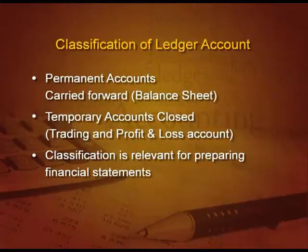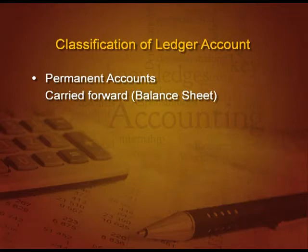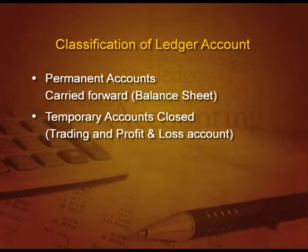Now let us classify the ledger accounts. There are two types: permanent accounts and temporary accounts. Permanent accounts are those which are carried forward in the balance sheet for the next period, whereas temporary accounts are those which are closed either in trading account or in profit and loss account. For example, furniture and building are permanent accounts — they are carried forward to the next year. Wages, salary, and office expenses are temporary accounts. Wages is transferred to trading account, salary is transferred to profit and loss account.